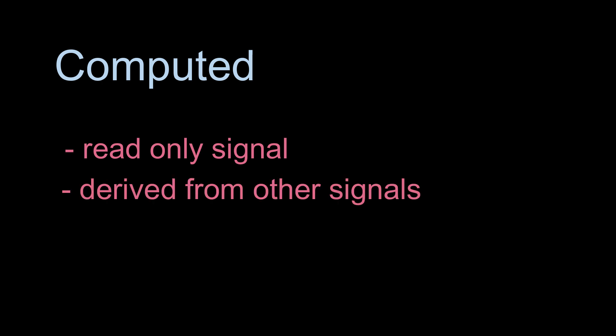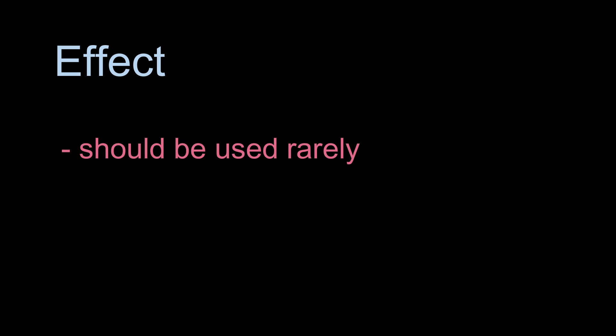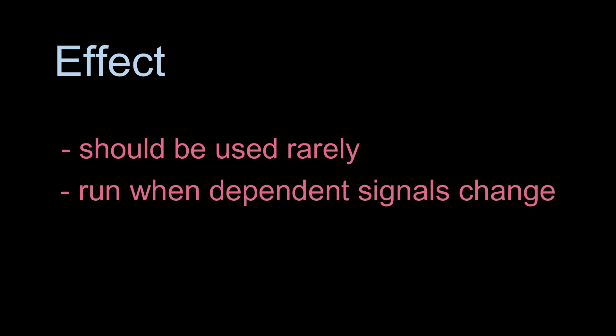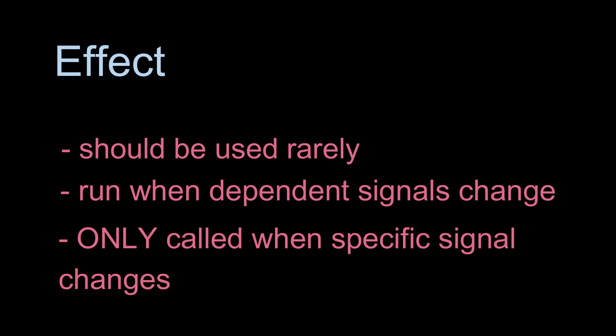The second primitive is the computed primitive. A computed is a read-only signal — it cannot be changed explicitly; it is derived from other signals. A computed value only changes if the signals it depends on change. The third reactive primitive is an effect. Effects should be used rarely, but they're basically functions which run whenever the dependent signals change. While computeds contain a value derived from a signal, effects can do something whenever those values change. Like computeds, effects are only executed when the specific signals they depend on are changed.